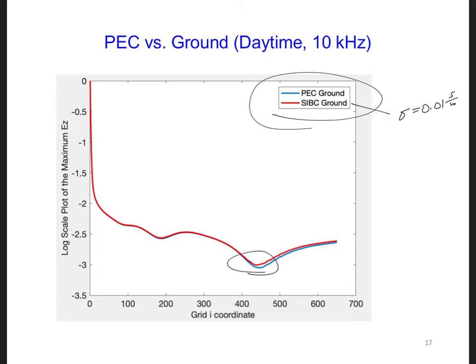This tells us that the ground parameters are not nearly as important for predicting the propagation of VLF waves around the Earth ionosphere waveguide as the ionospheric conditions or the source frequency.